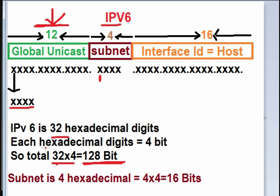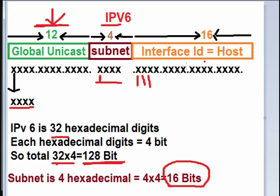So we can allocate more internet devices. And about the subnet — subnet is 4 hexadecimal, which means 4 into 4 is equal to 16 bits. So we can do subnetting with this 16 bits by default. We can extend it also. If we use the interface ID hexadecimal nibble, then we can extend the bits. But by default it is 16 bits and it is enough for subnetting.